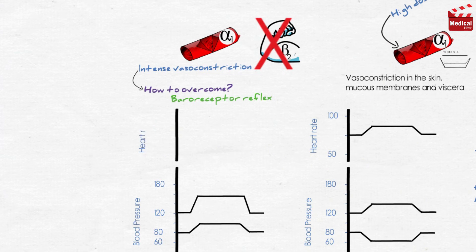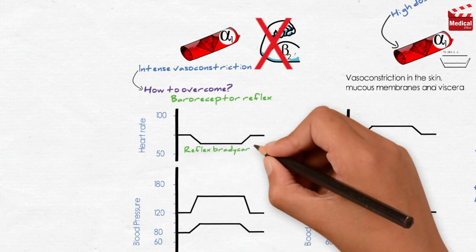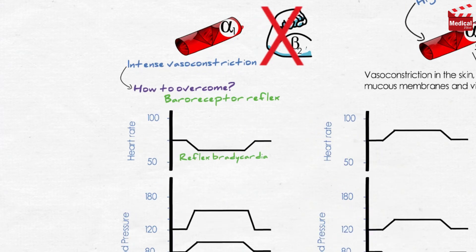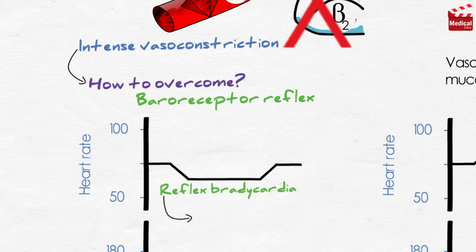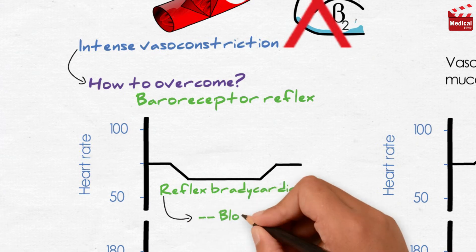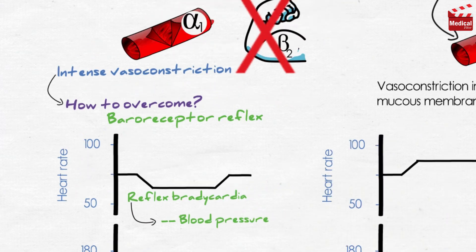When norepinephrine increases blood pressure, this stimulates the baroreceptors, inducing a rise in vagal activity, which is parasympathetic activity. That produces reflex bradycardia, and accordingly blood pressure decreases.